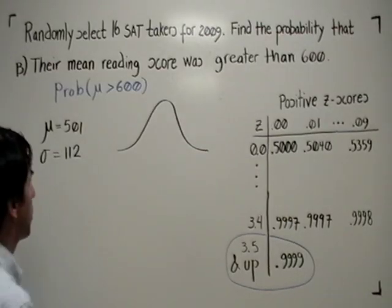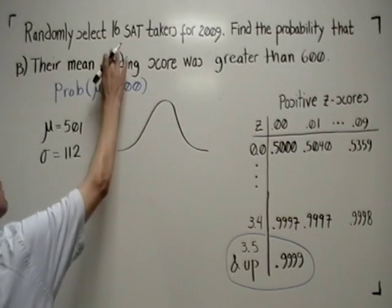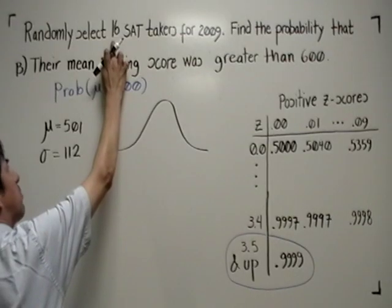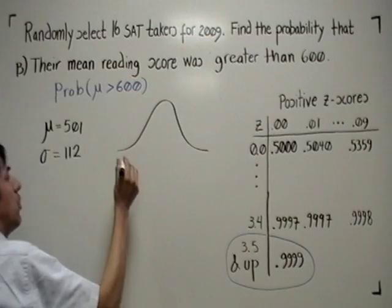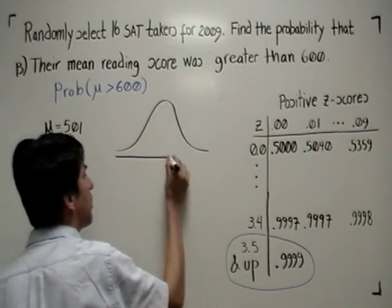If your original distribution is normal, regardless of sample size, the distribution of the means of those samples will be normal, or is expected to be normal.